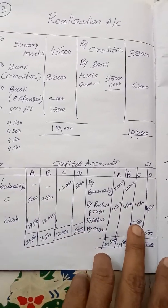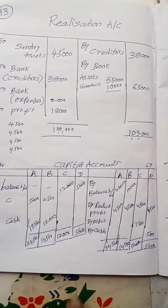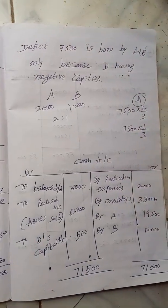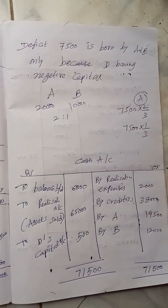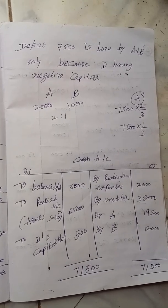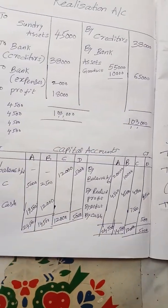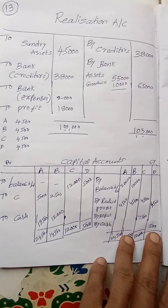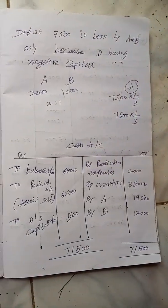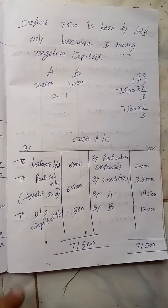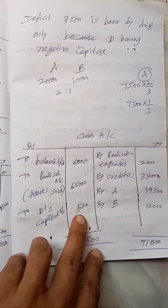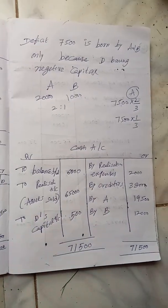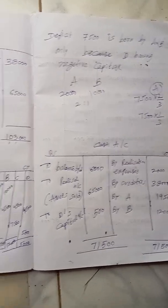The shortfall will be shared by A and B. Cash account shows: balance brought down, assets sold, amount brought in by D, realization expenses payment, payment to creditors, and final payment to A and B. This is one important problem in case of realization loss.